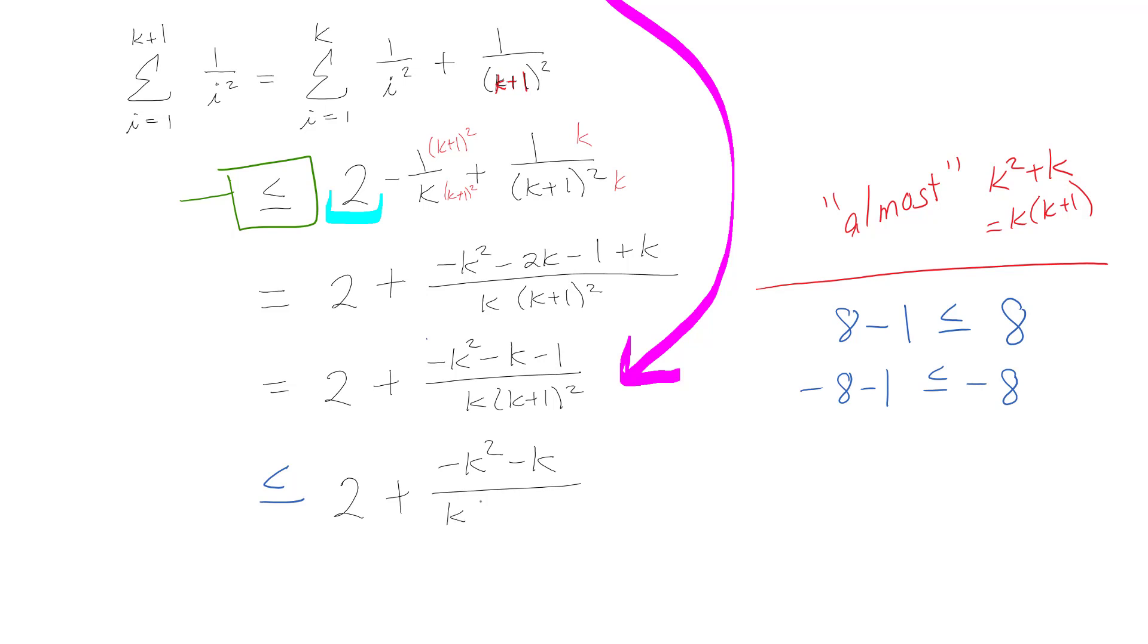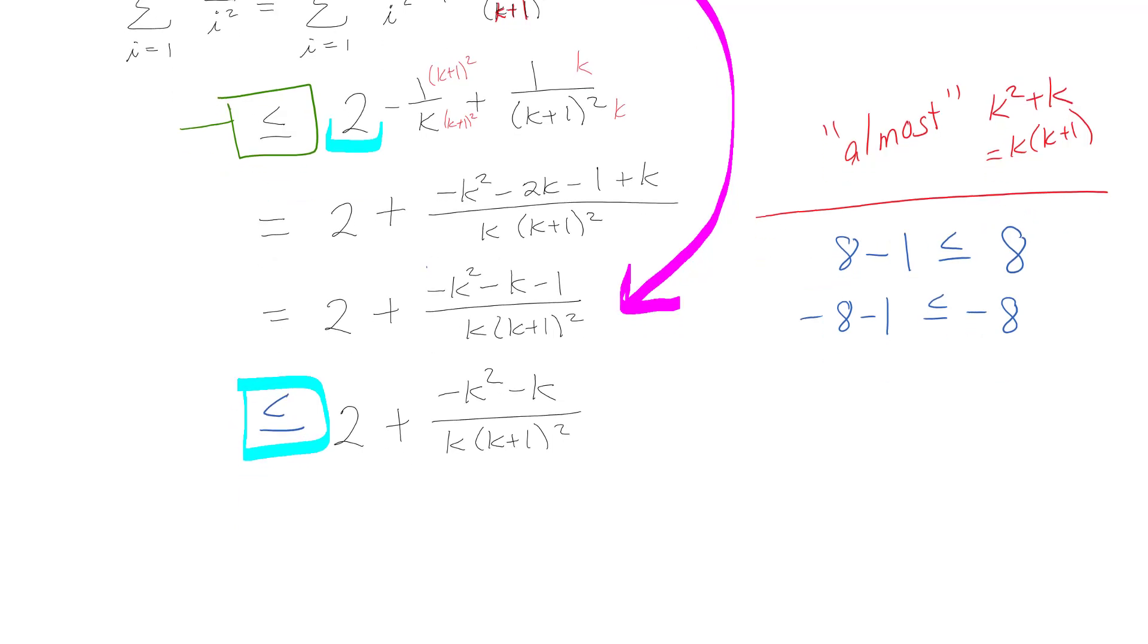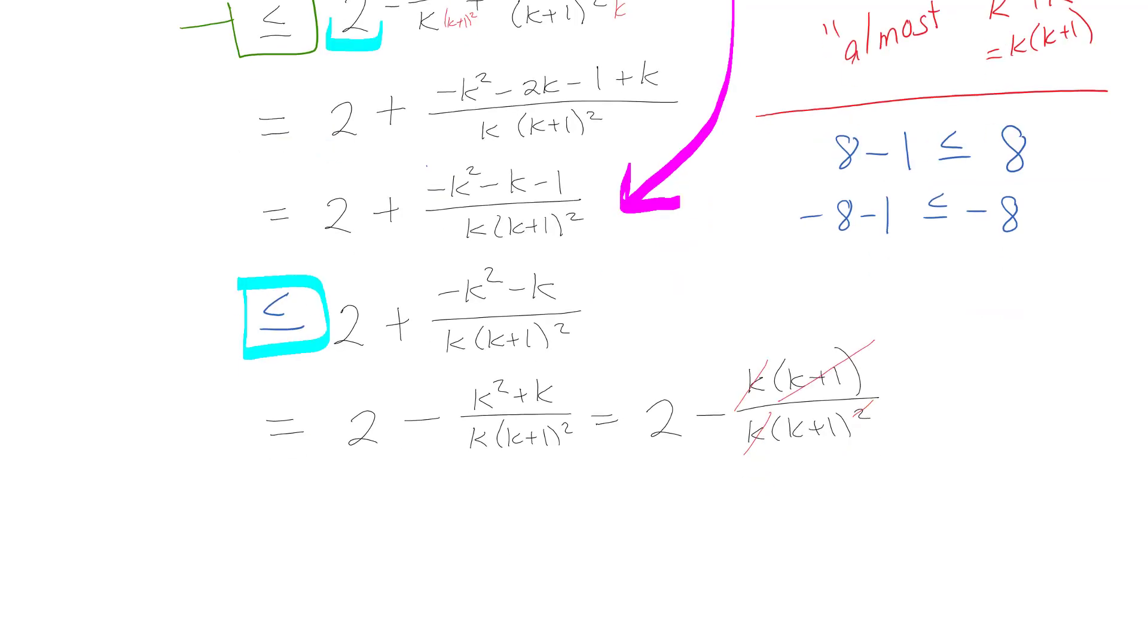So I can say, well that's going to be less than or equal to whatever this is without the negative 1. Without the negative 1 is more, if I don't subtract off 1 I get more. So I can put in this less than or equal to sign and just drop that negative 1 off of there. Now I can go back to equalities again. 2 minus k squared plus k over k plus 1 squared. Again, 2 minus k times k plus 1 over k times k plus 1 squared. So the k plus 1 cancels out with the square, the k and the k go away, and then I'm ending up with 2 minus 1 over k plus 1. And actually that is exactly what I was looking for.